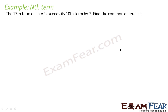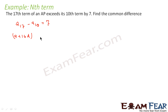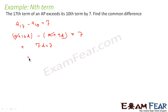If the 17th term of an AP exceeds the 10th term by 7, find the common difference. The question says a17 minus a10 equals 7. Now a17 is a plus 16d and a10 is a plus 9d. Subtracting: a cancels and we get (16 minus 9)d equals 7, so 7d equals 7.